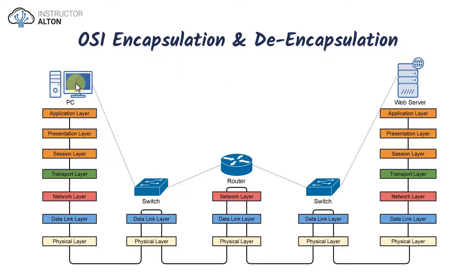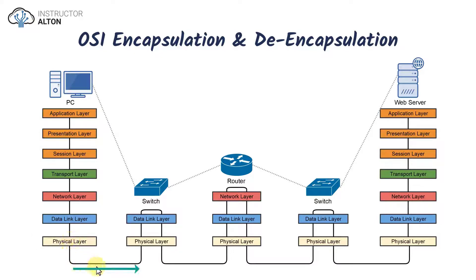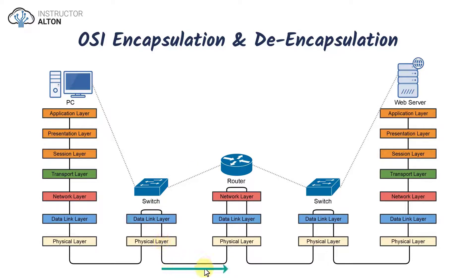We're on the PC. We open a web browser and request a web page from the web server. We start at the application layer and go all the way down to the physical layer, adding all the headers — the transport header, the packet header, and the frame header — and then the data travels down to the network cable connected to the switch. When it reaches the switch, it goes up to the data link layer, because that is the layer switches operate on. The switch looks at the source and destination MAC addresses in the frame header, determines where to send it, and knows it needs to go to the router.